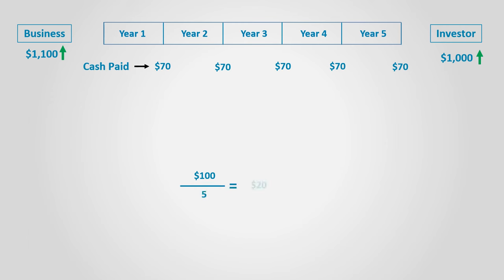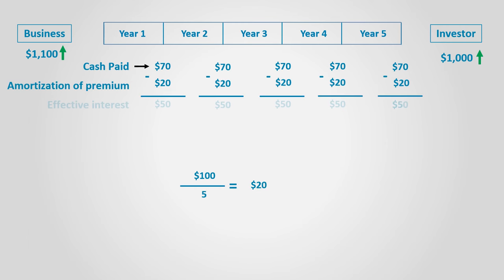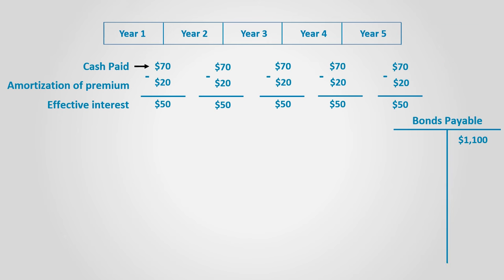From an accounting perspective and based on accrual accounting, this $100 should be fairly distributed among the periods of benefit. We will distribute the $100 using the straight-line method for simplicity, although the effective interest method should be used — also usually a topic of an intermediate accounting course. By distributing the $100 over 5 years, the share of each year is $20. So even though the business is paying $70 in cash, it will affect its expenses by deducting $20, as it was collected in advance in the form of a premium. The effective interest is equal to the $70 which is paid minus the $20 already collected in advance, so it is equal to $50.